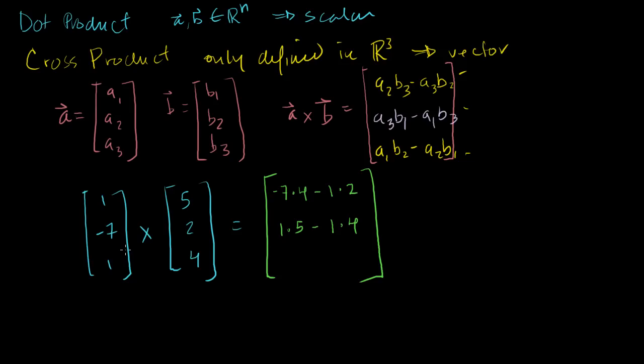Remember, you might have been tempted to do 1 times 4 minus 1 times 5, because that's how we essentially did it in the first term. But the middle term is the opposite. And then finally, the third term, you ignore the third terms here, and then you do it just like the first term. You start on the top left: 1 times 2 minus -7 times 5.